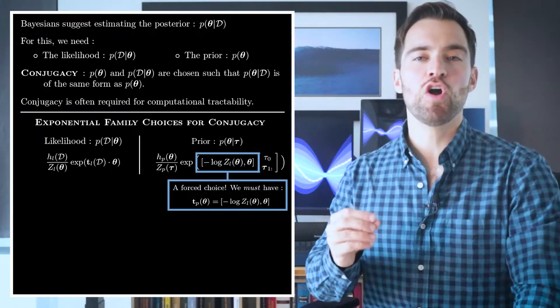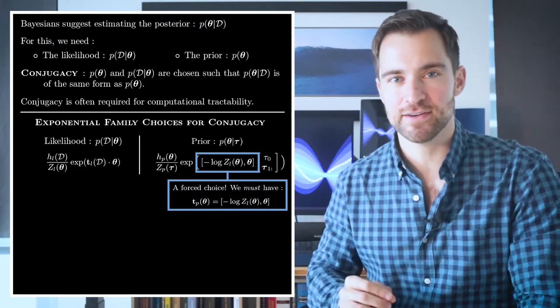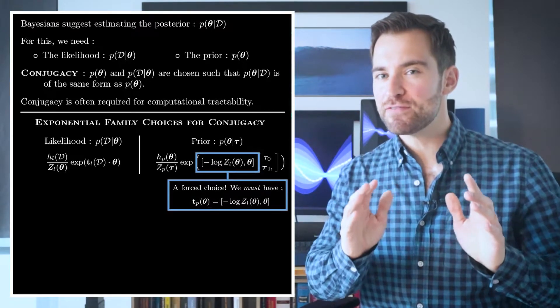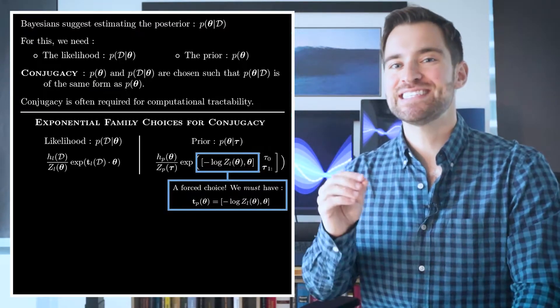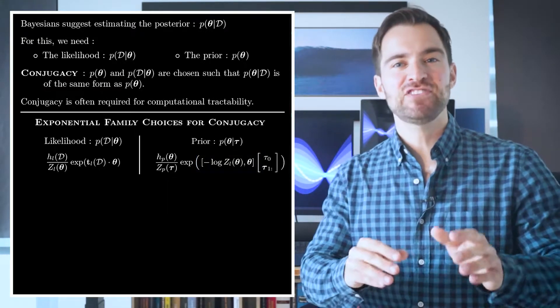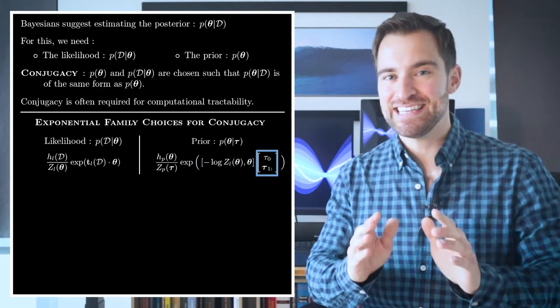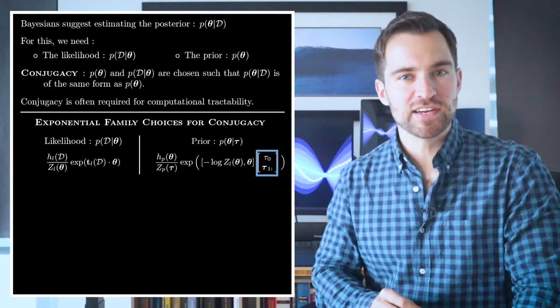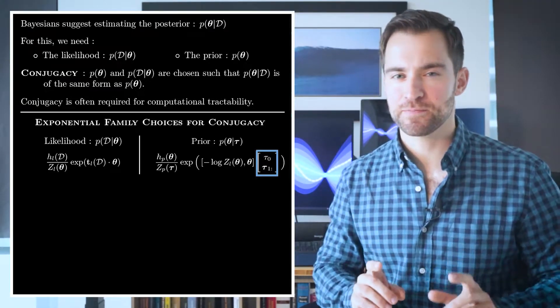This shows that we are restricted in our choice of sufficient statistics of θ. Notice this expression involves the log normalizer from the likelihood. Regarding the domain of θ, it's implicit here that it's the same across the likelihood and the prior. Also, in anticipation of some algebra, I've separated the τ vector into these two pieces, one of which is a vector and one of which is a scalar.